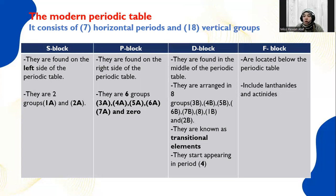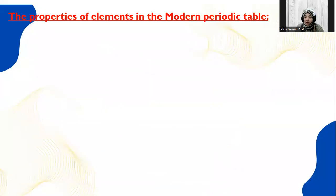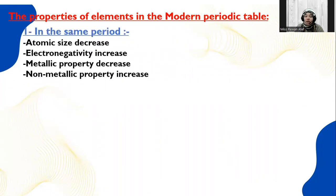The last block is F block. F block is located below the periodic table and includes lanthanoids and actinoids. So here is about the periodic table.